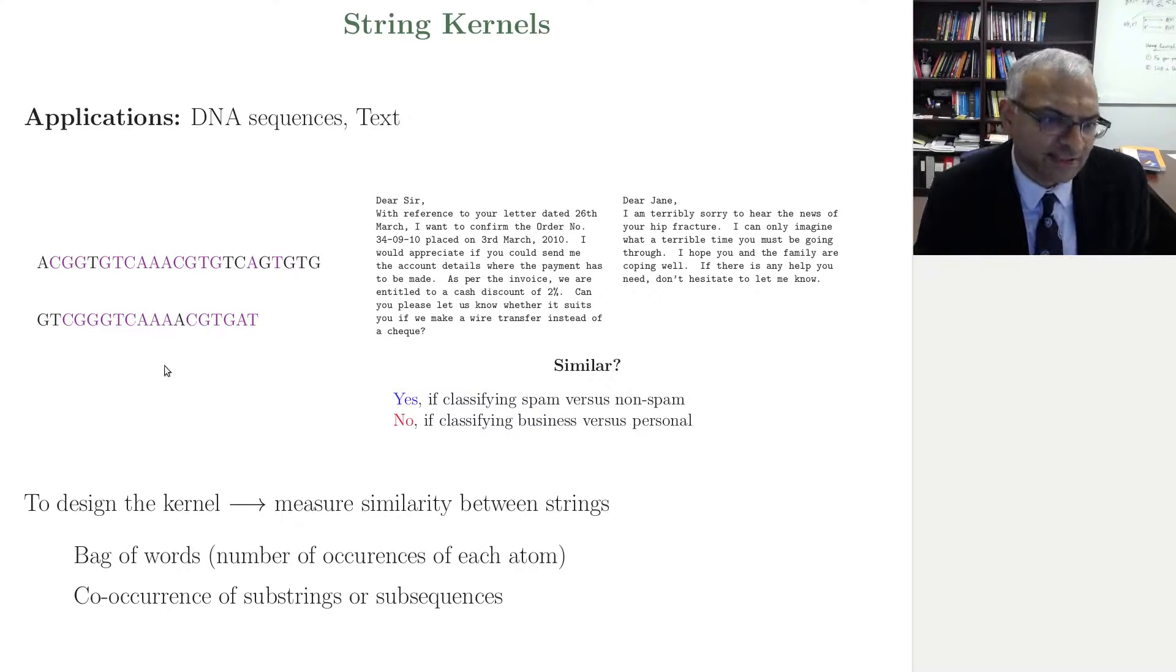Now I have a measure of similarity for strings relevant to DNA sequences, and I can go and do my classification task using the support vector machinery, the kernel machinery. Let's take an example of text. In text, there are feature vectors, features that are typically constructed, involve things that are called bags of words, where you count the number of occurrences of specific words that can be a feature vector, or co-occurrences of substrings or subsequences.